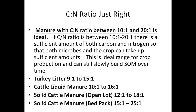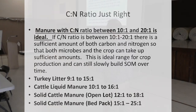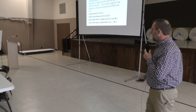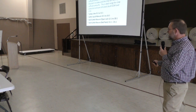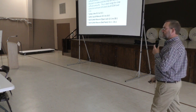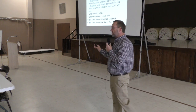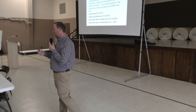So where's the sweet spot? Well, it's typically between a 10 to 1 to 20 to 1 ratio. This is ideal because there's a sufficient amount of carbon and nitrogen for both the microbes and the crops, helping build soil organic matter without hurting crop production. You really aren't going to know what your manure carbon to nitrogen ratio is unless you go test it, and that is a test you can have run.